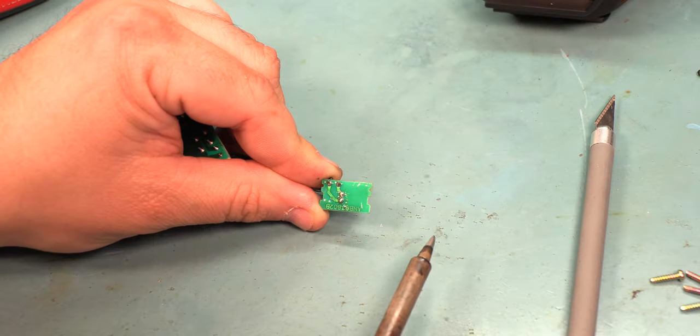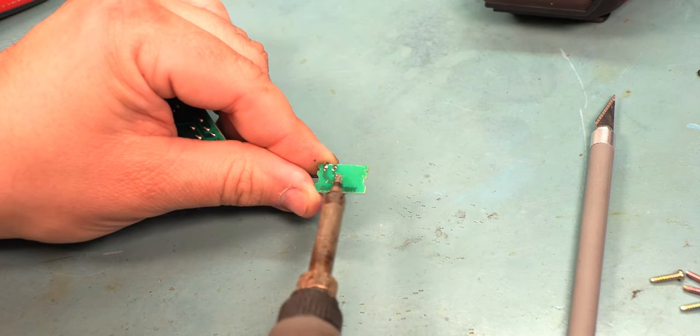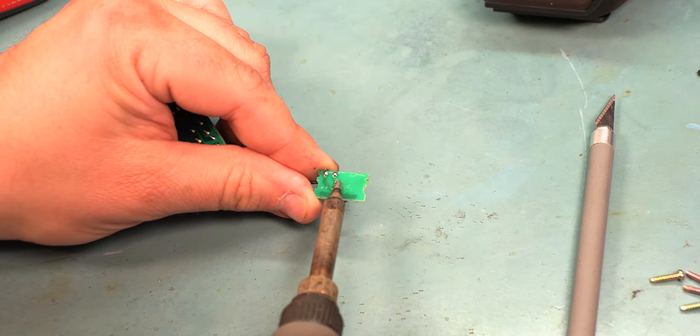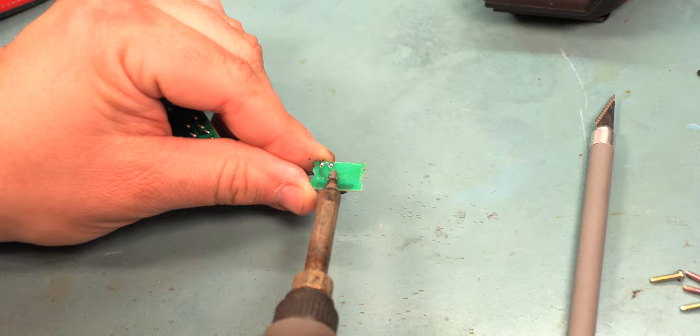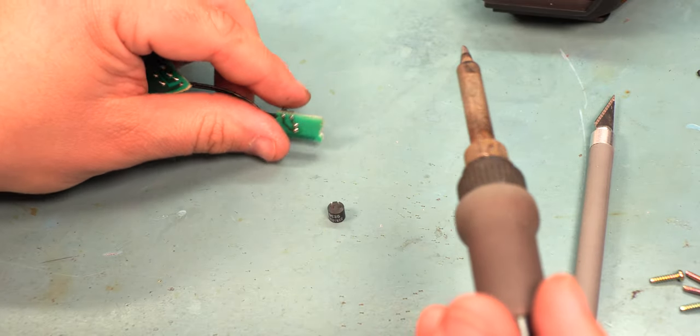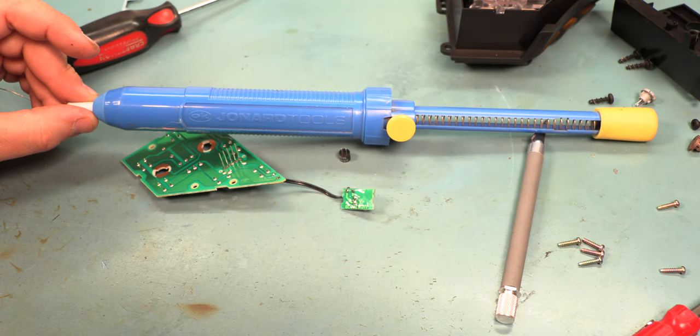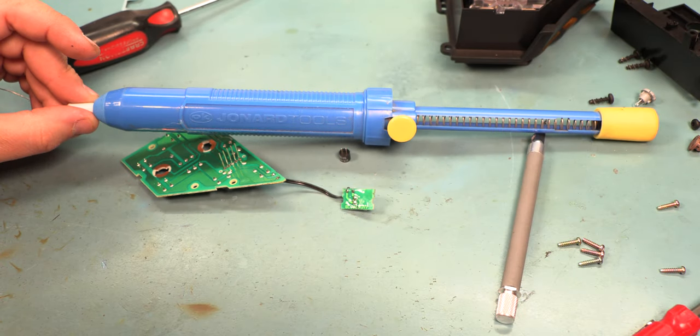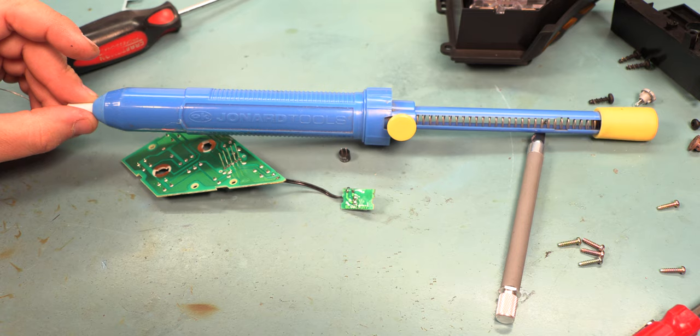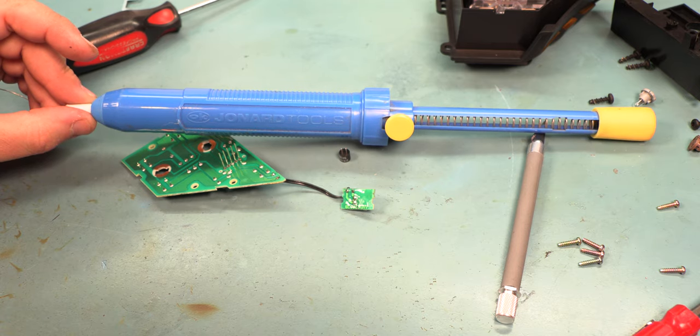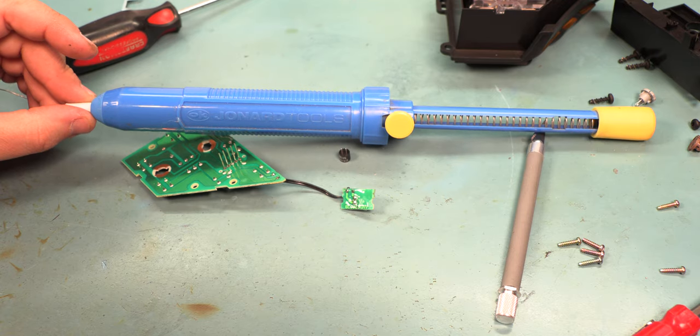To remove the photocell and the housing from the circuit board, we'll apply heat to both terminals and the component will fall free. Next, use your favorite method of solder removal to remove the solder from the holes. In this case, we're going to use a vacuum solder removal tool. These are very efficient and they're fairly cheap.